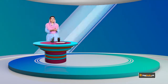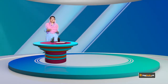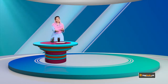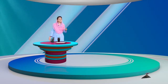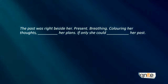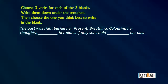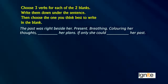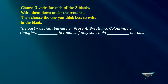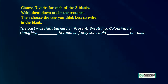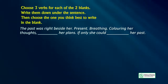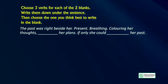Now let's look at a practical example — we have an activity. Choose three verbs for each of the two blanks, write them down under the sentence, and then choose the one you think best fits. The sentence is: 'The past was right beside her, present, breathing, colouring her thoughts, [blank] her plans. If only she could [blank] her past.'